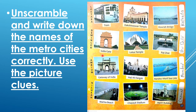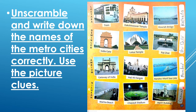Number two: India Gate, Lotus Temple, Rajghat — which city are these famous for? New Delhi. Yes, so you have to write here New Delhi. Gateway of India, Haji Ali Dargah, Bandra Worli Sea Link — which city's famous places are these? Mumbai. Very good — so you have to write here Mumbai. Marina Beach, Chepauk Stadium, Rippon Building — these are famous places of Chennai. So you have to write here Chennai.